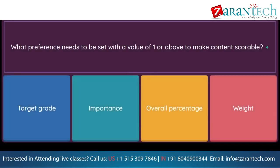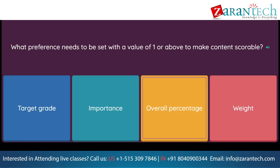Question: What preference needs to be set with a value of 1 or above to make content scorable? Option 1: target grade. Option 2: importance. Option 3: overall percentage. Option 4: weight.